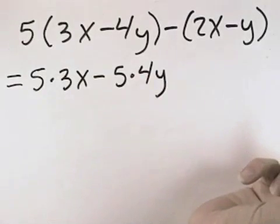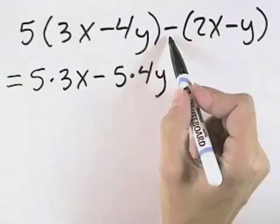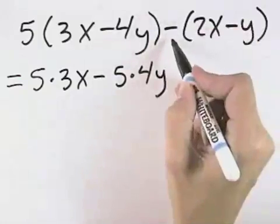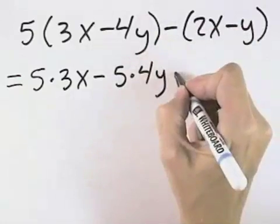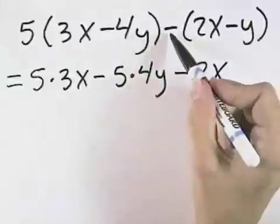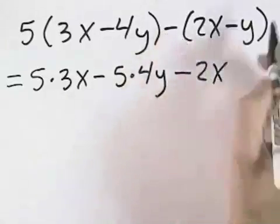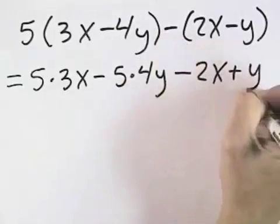In our second set of parentheses, we're distributing the negative sign through. You can think of it as a negative 1. The negative times 2x makes that negative 2x. Then we have a negative and another negative. When you multiply negative times a negative, you get a positive y.